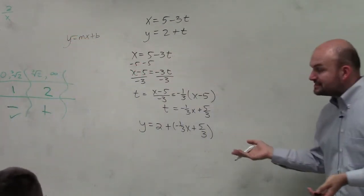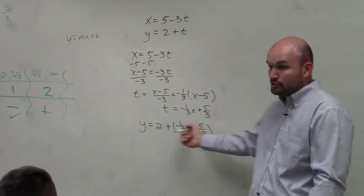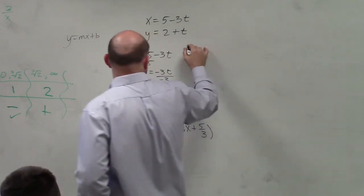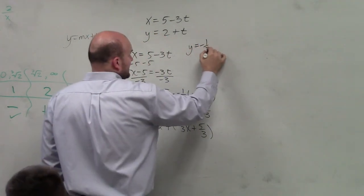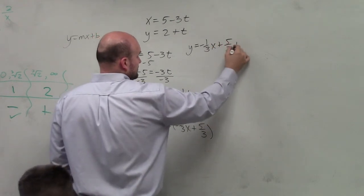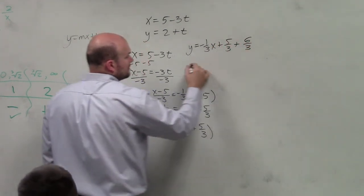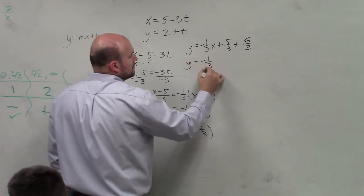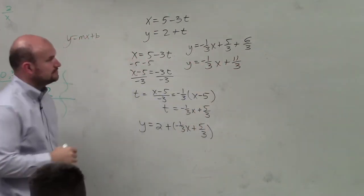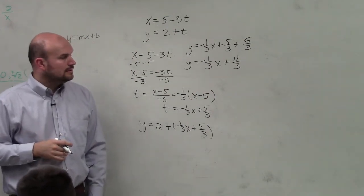Now we just need to simplify this and put it in slope-intercept form, even though you could type that in your calculator. I could rewrite 2 as six-thirds, so y equals negative one-third x plus five-thirds plus six-thirds.